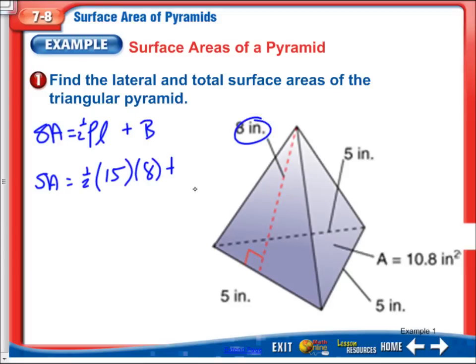Plus the area of the base. Now, the base is a triangle in this case. So we have to do one half times... But actually here, it actually tells us the area of the base. So that kind of makes it a little bit easier for us. So we're just going to say plus 10.8.